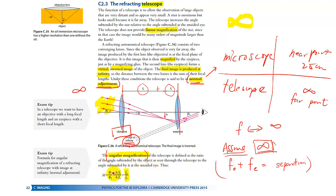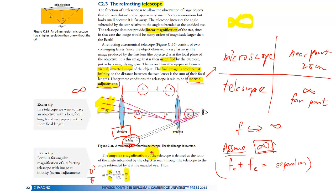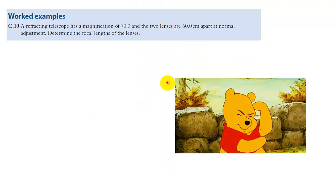Similarly for angular magnification — when you are set to normal adjustment, according to the basic definition of angular magnification, it should be theta prime over theta. The equation is actually quite simple: it's F_o over F_e, which is a formula you can find in the data booklet. You can work it out using tangent theta with the small angle approximation. Basically that's it for the refracting telescope. Let's try to work on some examples — pause the video now, try it out, and then continue.